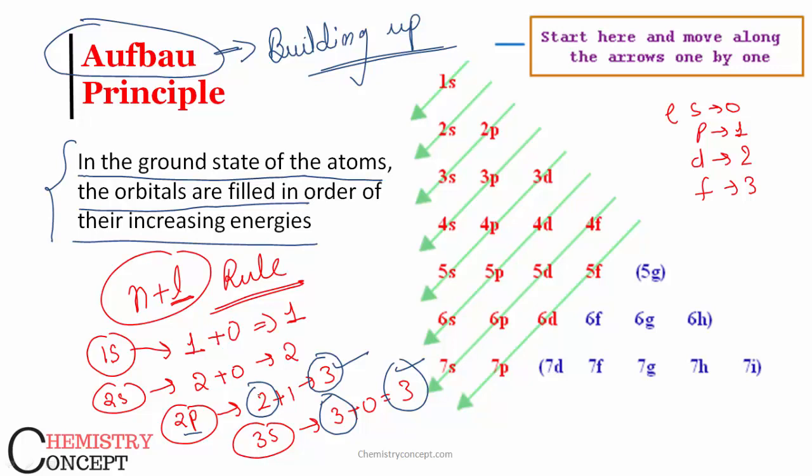The orbital which has lower value of n would be of lower energy. So in case of 2p orbital, n is two. In case of 3s orbital, n is three. So although they both have the same n plus l value equal to three, 2p would be of lower energy than 3s.